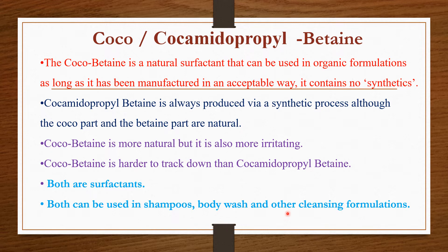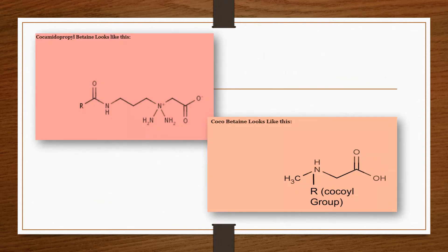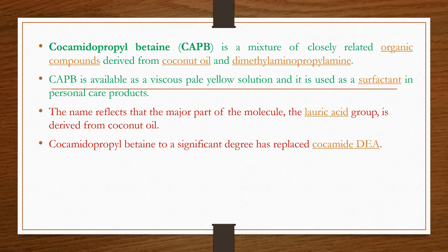People are often unaware that they are using surfactants in shampoos or cosmetic products labeled as containing no SLS — surfactants are still present under different names. This is the structure of cocoamidopropyl betaine, and this is coco betaine, where you can see the cocoyl group attached. If your skin is sensitive to a product containing CAPB, you may notice tightness, redness, or itchiness after use.